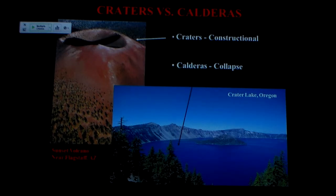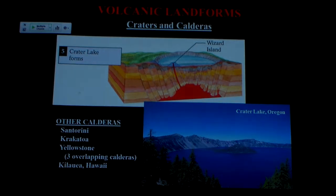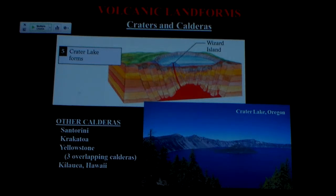Rather than being constructional, a caldera is destructional. You can see that with Crater Lake — the big cone that used to be there, Mount Mazama, collapsed into the magma chamber, left a big hole on the surface, and eventually filled with water. It's kind of a misnomer — really it should be called Caldera Lake. Over time, the magma chamber has refilled, and some of that magma has found its way to the surface, starting to build a new composite cone. That shows up as Wizard Island in Crater Lake today.